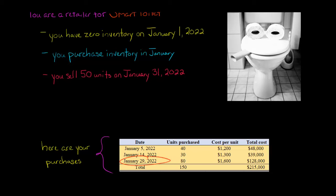And then on January 29th, we make our third purchase. We buy an additional 80 units at $1,600 a unit for $128,000 total. So if we look at all three purchases, and we haven't made any sales yet, we're not going to make a sale until January 31st. So we bought 150 units, and we've paid a grand total of $215,000.